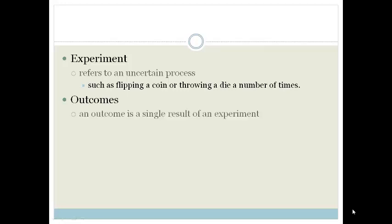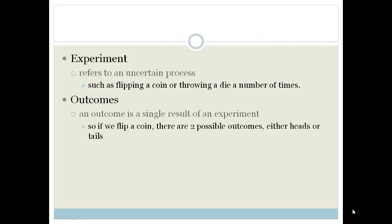The outcomes are what you get from a single result of an experiment. So if I flip a coin, we've got two possible outcomes. Either we've got heads or we've got tails, or if I throw a die we could get 1, 2, 3, 4, 5, or 6. So an outcome is the single result of an experiment.